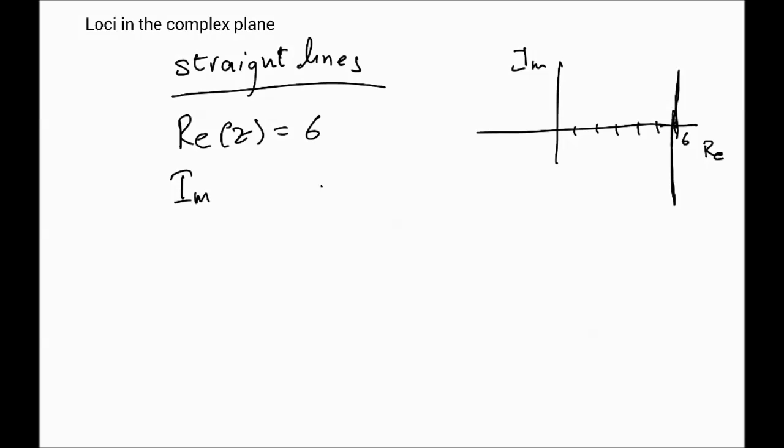In a similar way, one could say that the imaginary part of z equals 8. That would mean this line here, because all we're saying is the imaginary part of z is 8, and the real part can be anything. So it could be from minus infinity to plus infinity. So here are two loci for two different situations, two types of straight lines, horizontal line and a vertical line.